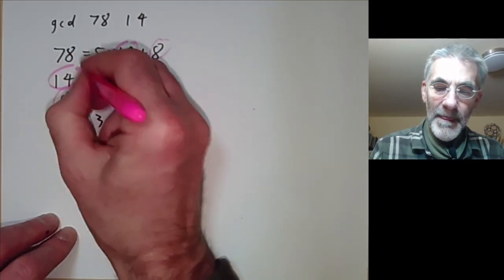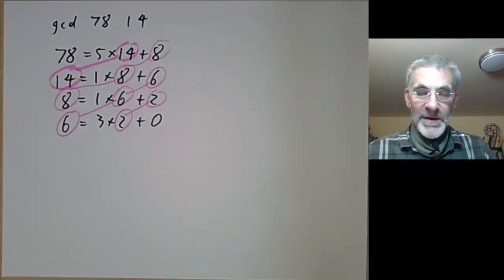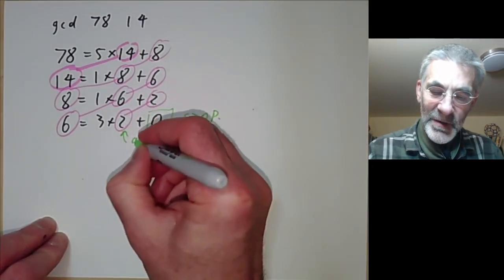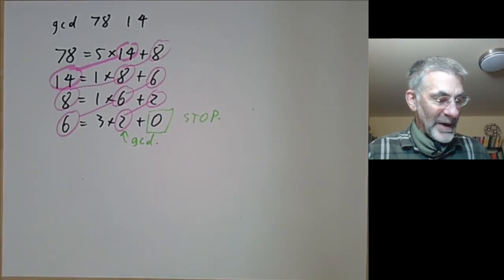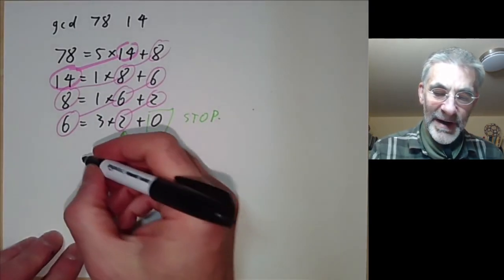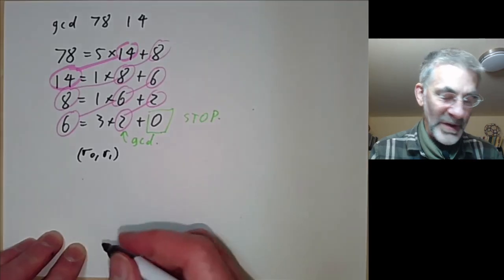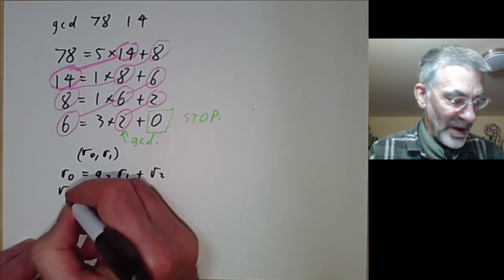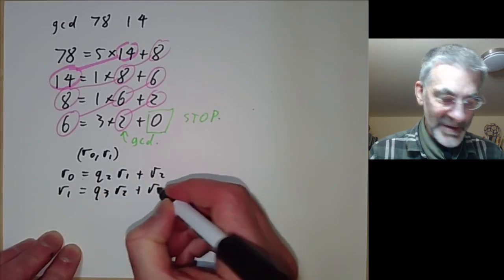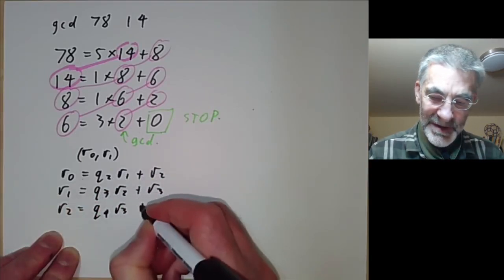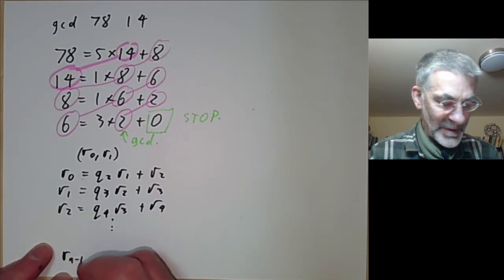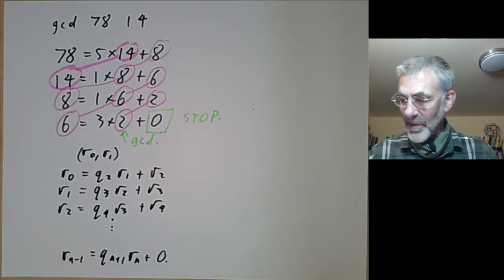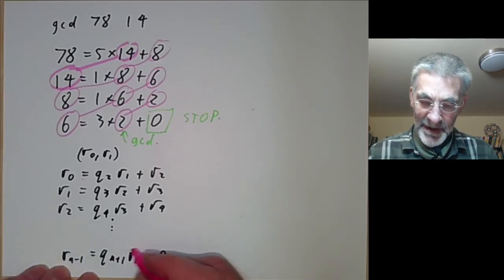When you get to a zero remainder, you stop, and the last nonzero remainder is the greatest common divisor. More algebraically: given r₀ and r₁, we compute r₀ = q₂r₁ + r₂, then r₁ = q₃r₂ + r₃, then r₂ = q₄r₃ + r₄, continuing until rₙ₋₁ = qₙ₊₁rₙ + 0. At that point we stop and the greatest common divisor is rₙ.